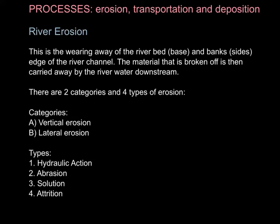This is your second video on processes, depending on what order you've watched them in. This time, rather than focusing on coastal erosion, I'm focusing on river erosion. It's very crucial that you remember what section of the paper you are in when you are asked to define erosion. If it's in the rivers section — water on the land — it must be related to the river bed and banks. If it's in the coast section, it must be related to the river cliff.